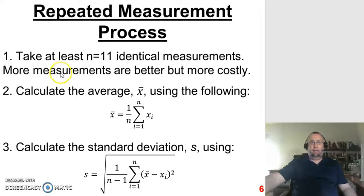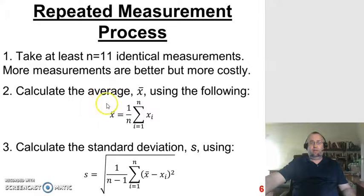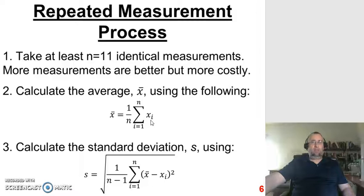We're taking 11 measurements — 10 plus 1 gives a statistically meaningful number, so n equals 11 for our purposes. The more measurements you take, the more costly it is in time, money, and processing power. Once you've taken your 11 or more measurements, the first step is to calculate the average value using the averaging formula. The average value becomes the reported experimental value. To determine experimental uncertainty, you then calculate the standard deviation using the standard deviation formula.